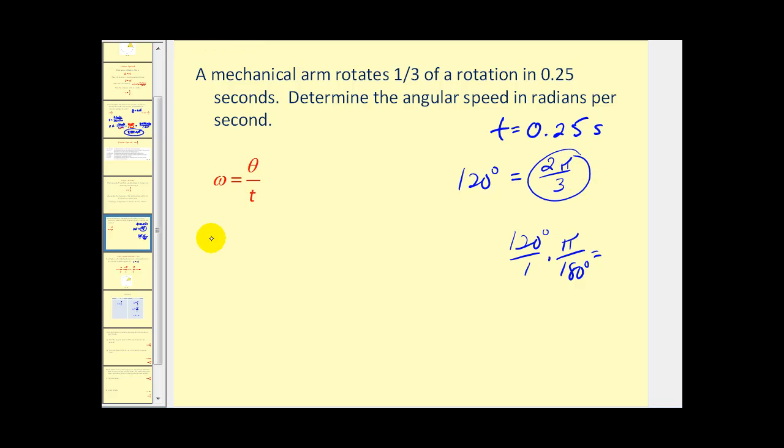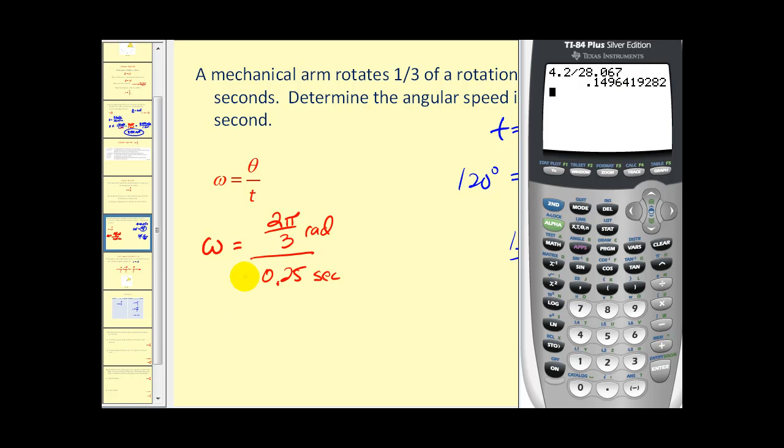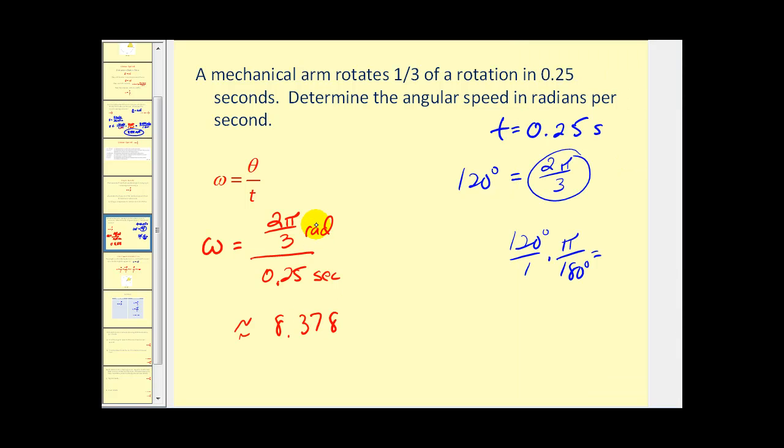So our angular velocity is equal to theta, which we said was 2π divided by 3, all over t which is 0.25. We'll go ahead and divide to find our angular velocity, and it comes out to approximately 8.378 and the units are radians per second.